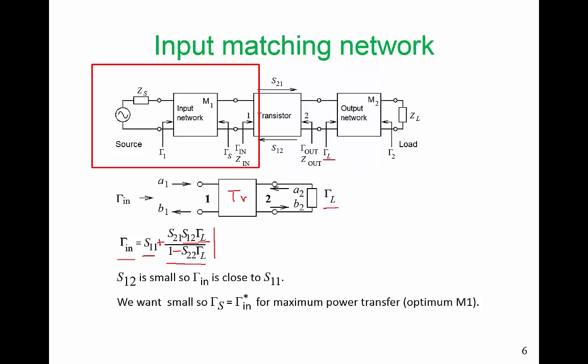Let's get back to some guidelines for this input matching network design. Here is our input matching network here. We want to design that input matching network to present the right gamma-Ris for our amplifier design. We want, for an optimum input matching network, we want gamma-Ris equal to gamma-In conjugate for maximum power transfer.